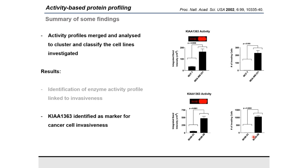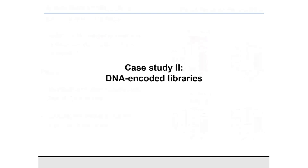This is the end of the first case study. I hope it exemplifies how activity-based protein profiling can allow chemical biologists to identify new enzymes — in this case KIAA1363 — that could be further investigated to treat diseases. Let's move on to case study two, where we will discuss DNA-encoded libraries in the context of hit-finding.